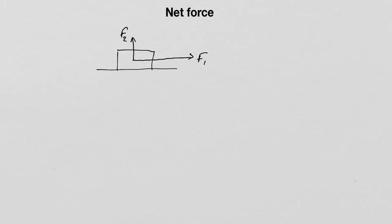Because this box is under the action of those two forces, it's going to move in a certain manner. If I replaced those two forces with a single force equal to the sum of those two added as vector quantities, the box is going to move exactly the same way. This single force is known as the net force.